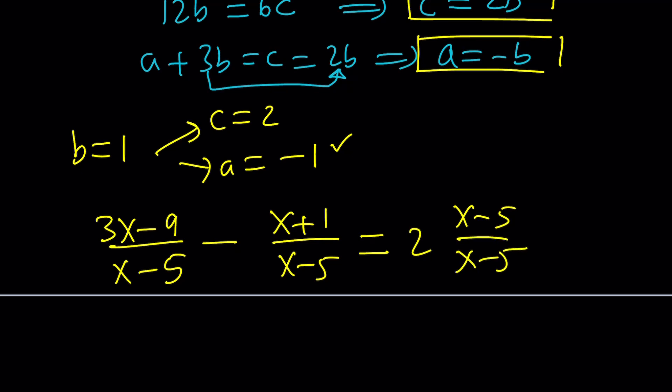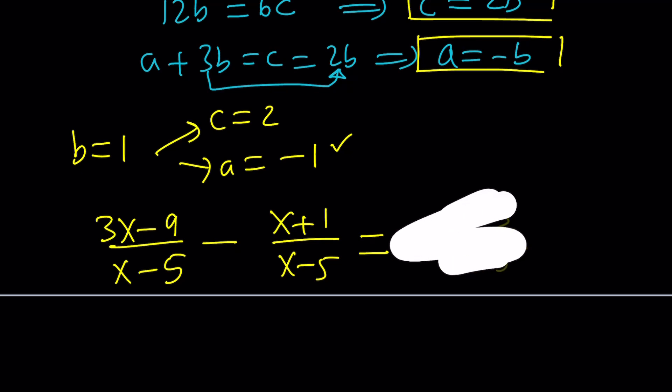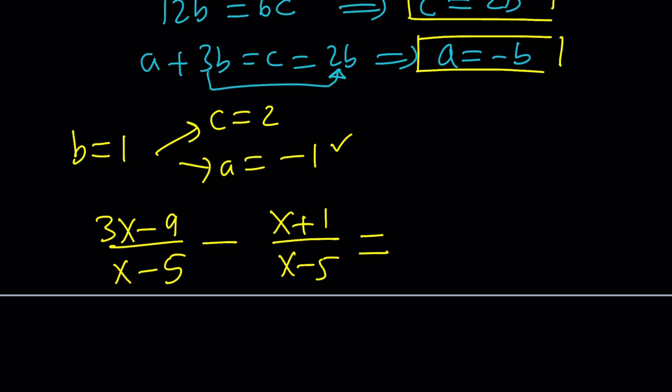Uh-oh, 3x minus x is 2x. Negative 9 minus 1 is -10. And this is actually 2 times (x-5) divided by x-5. So, this is equal to 2. And this is your c value. You see that? Everything checks out. Beautiful.